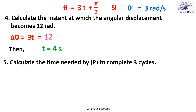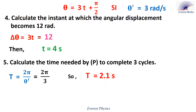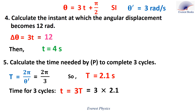Number 5: Calculate the time needed by P to complete 3 cycles. Since the motion of P is uniform circular, the period is given by 2π over theta prime. Since theta prime equals 3, the period is 2π over 3, which is approximately 2.1 seconds. Therefore, the time needed by P to complete 3 cycles is 3 times T, which equals approximately 6.3 seconds.